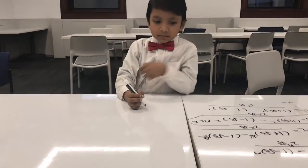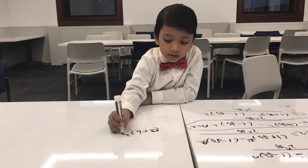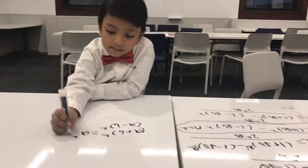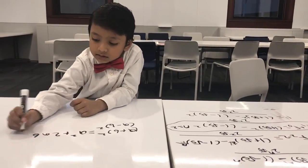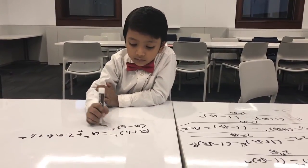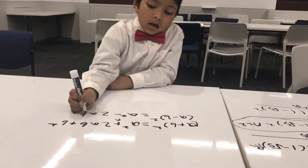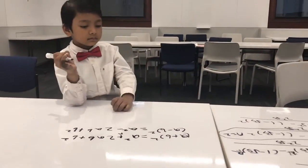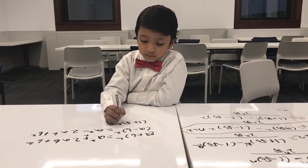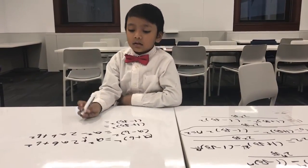Now I'm going to write the a plus b thing here. So a plus b squared equals a squared plus 2ab plus b squared. And a minus b squared — this turns minus — which is a squared minus 2ab plus b squared.